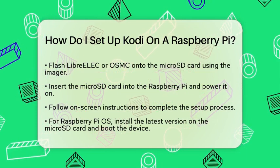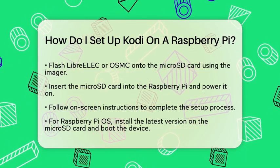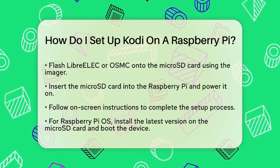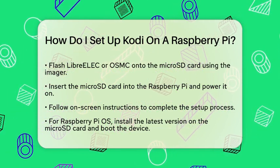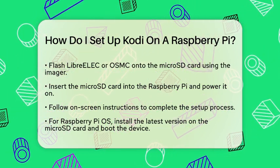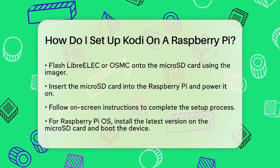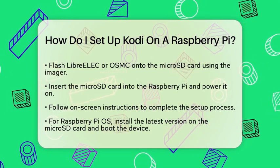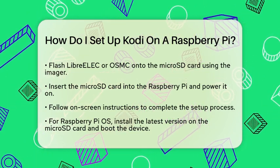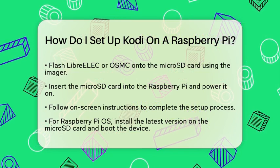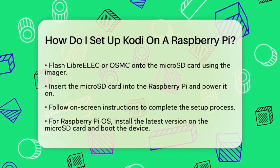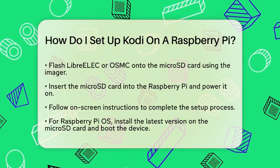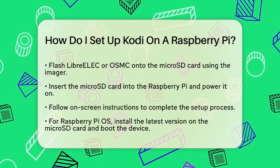Now, let's get into the installation steps. If you choose LibreElec or OSMC, start by downloading the Raspberry Pi Imager from the official Raspberry Pi website. Use the imager to flash either LibreElec or OSMC onto your microSD card. Once that's done, insert the microSD card into your Raspberry Pi and power it on. Follow the on-screen instructions to complete the setup.